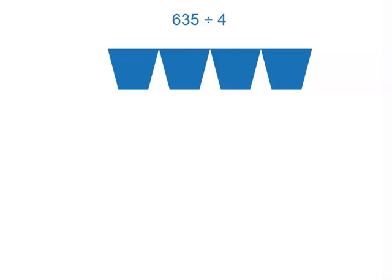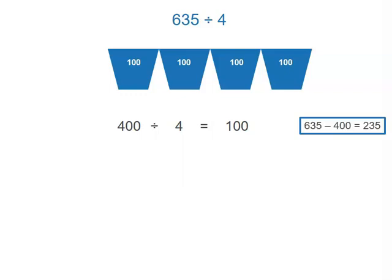Imagine our 600. If they were six $100 notes, we couldn't share all six out, but we could give each bucket one of them. So we're going to share 400 and break 635 into chunks. Our first chunk is 400 divided by 4 equals 100. We've used up 400, but we've still got 235 to share.